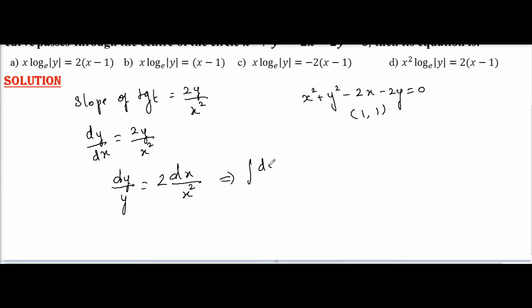Integral dy by y is log mod y equals 2 into x square integrated, which is minus 2 by x plus c.